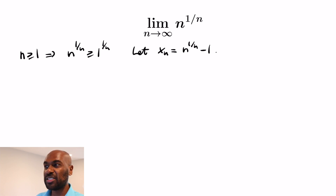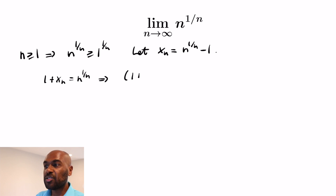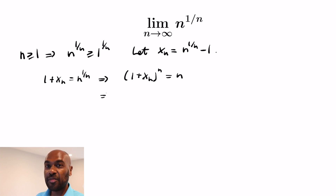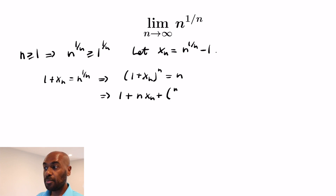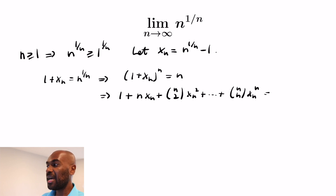We'll get an interesting estimate for this non-negative number by thinking about it in the following way. Adding 1 to each side, we get 1 + x_n = n^(1/n), so (1 + x_n)^n = n itself. Expanding the left-hand side as a polynomial in x_n using the binomial theorem, we get 1 + n·x_n + C(n,2)·x_n² + ... up to C(n,n)·x_n^n, and that equals n.